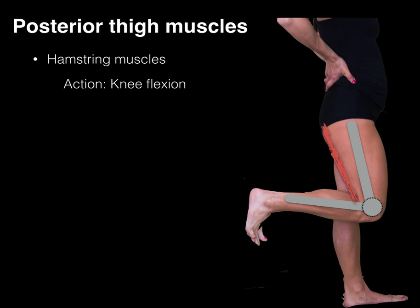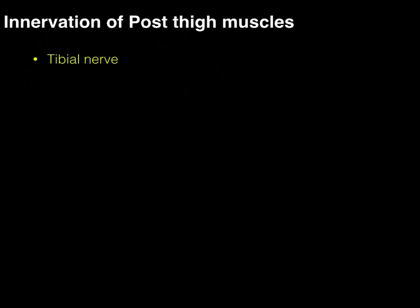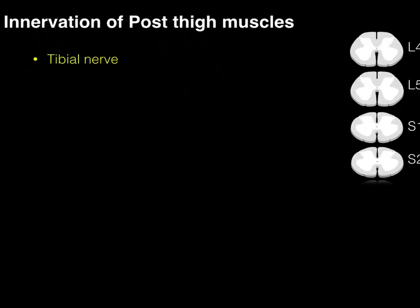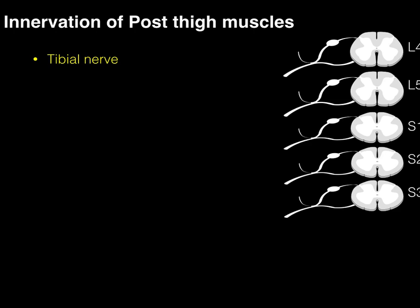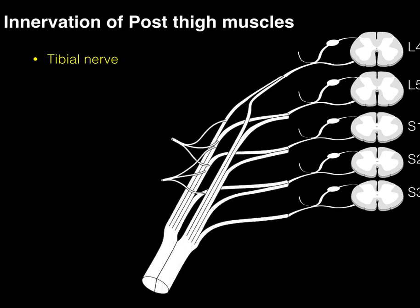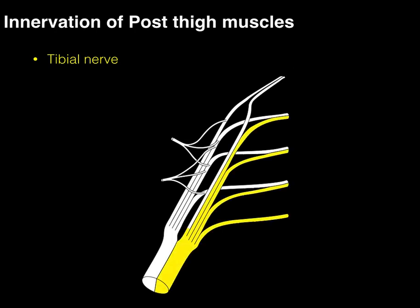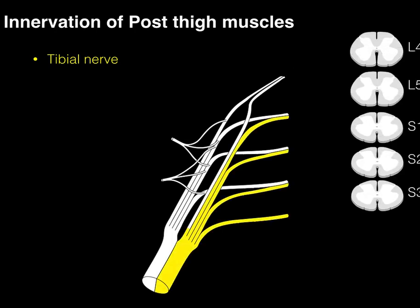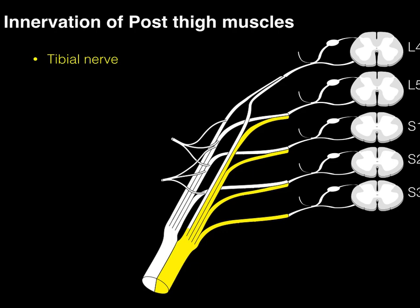The innervation of the posterior thigh muscles is by the tibial nerve. We've got the lumbosacral region of the spinal cord with the ventral rami going to the sacral plexus. In yellow, that's where the hamstrings are going to be innervated by the tibial nerve — technically from the L5-S1 level, but it's not too essential that you know this one.